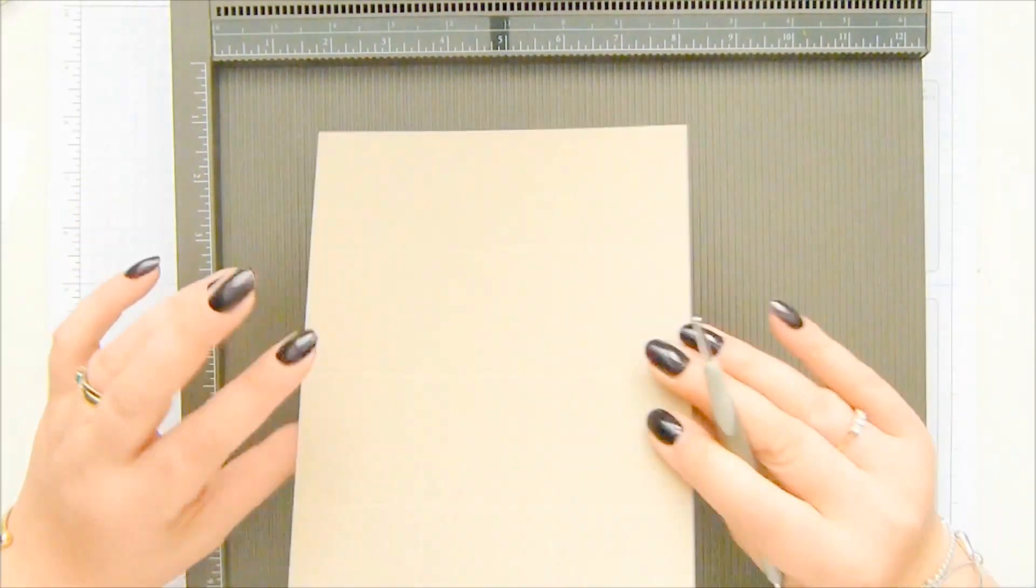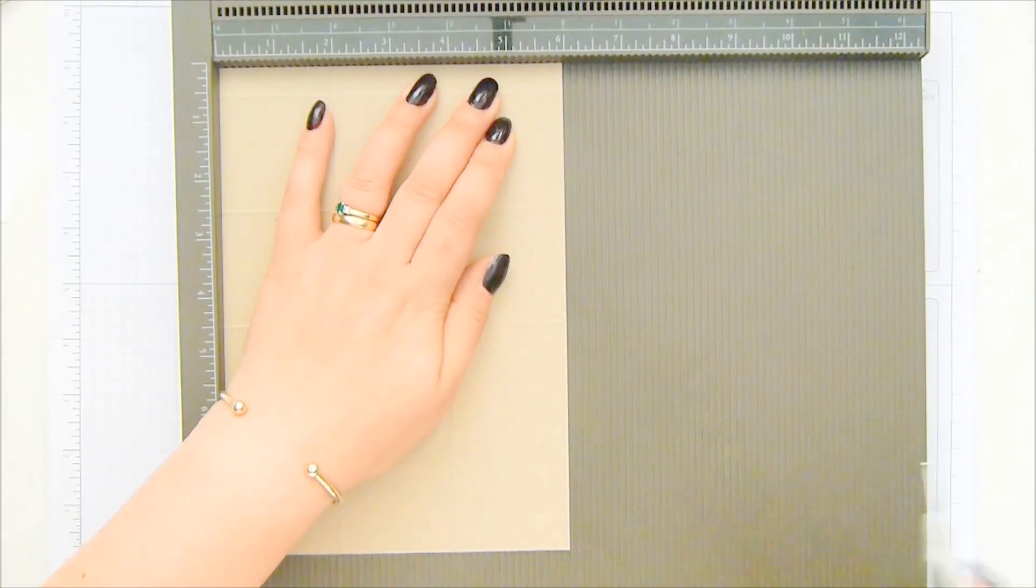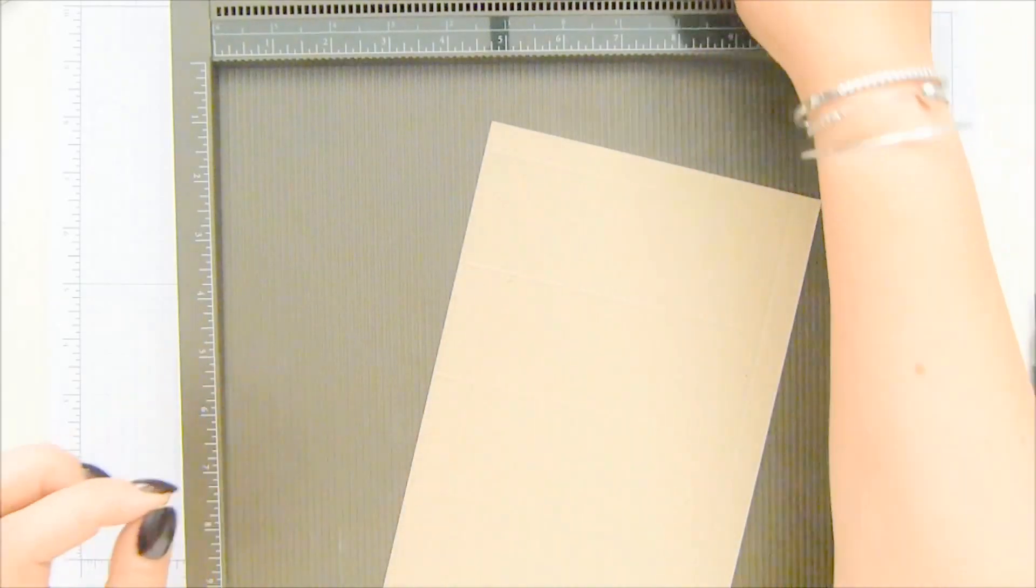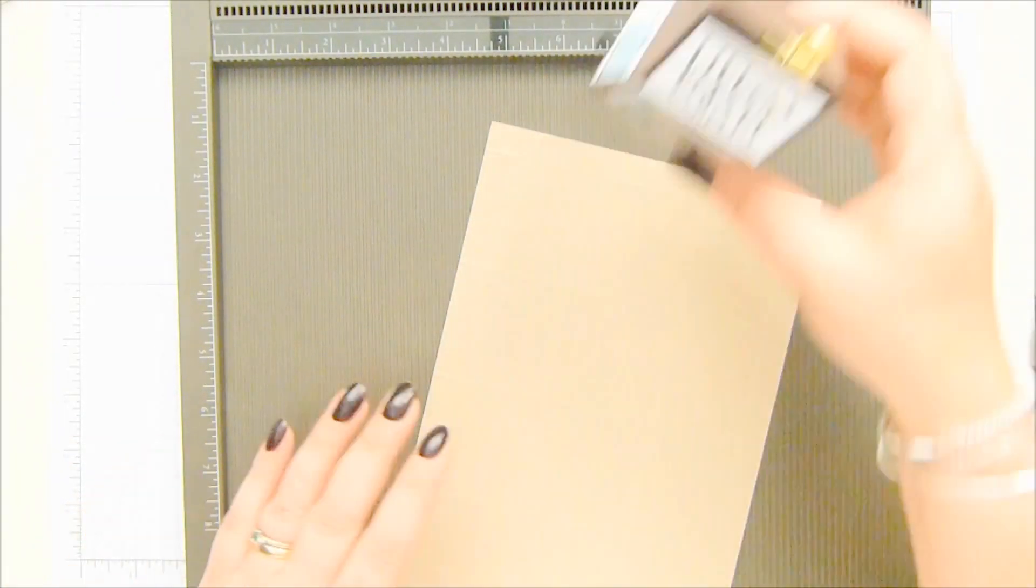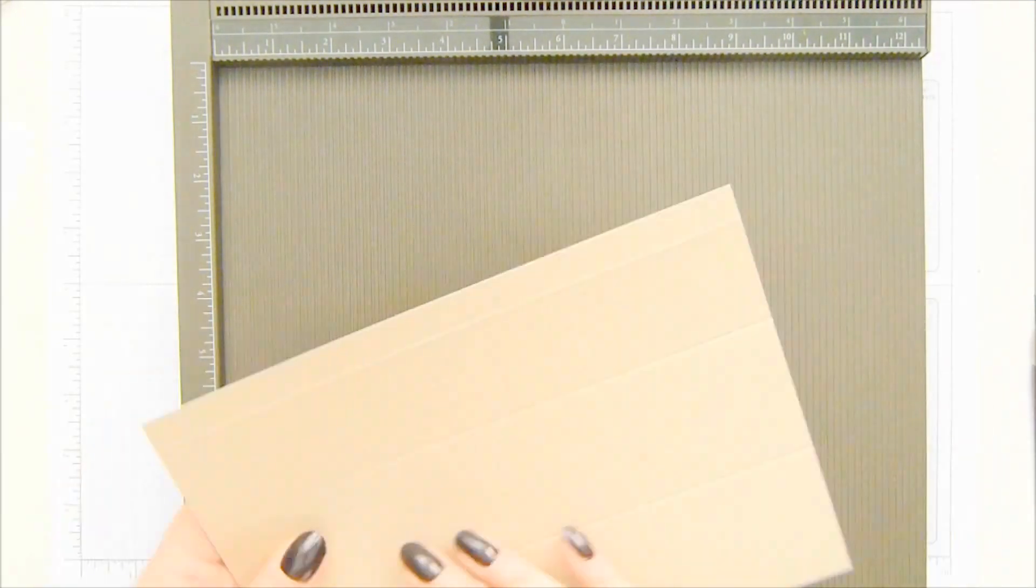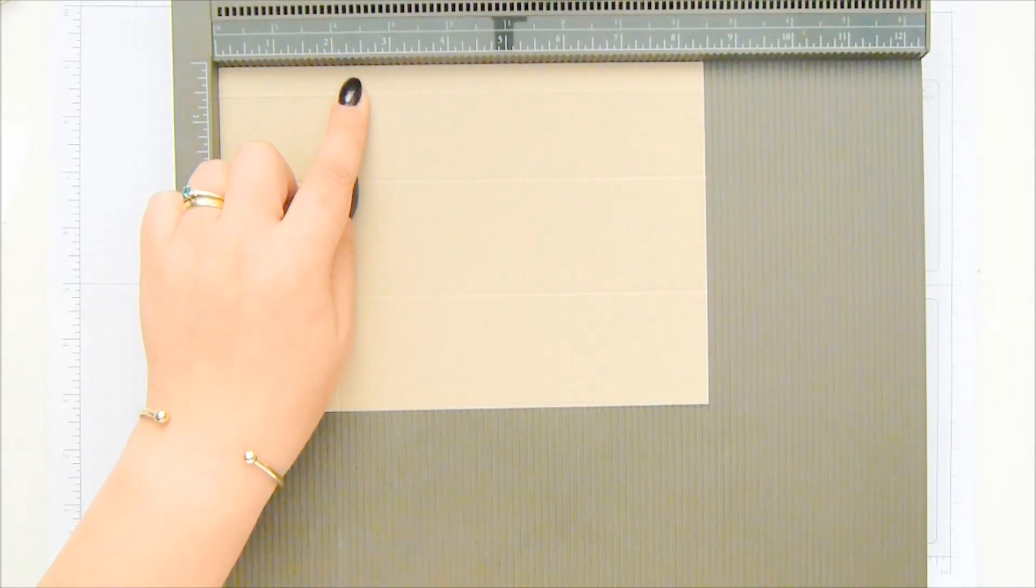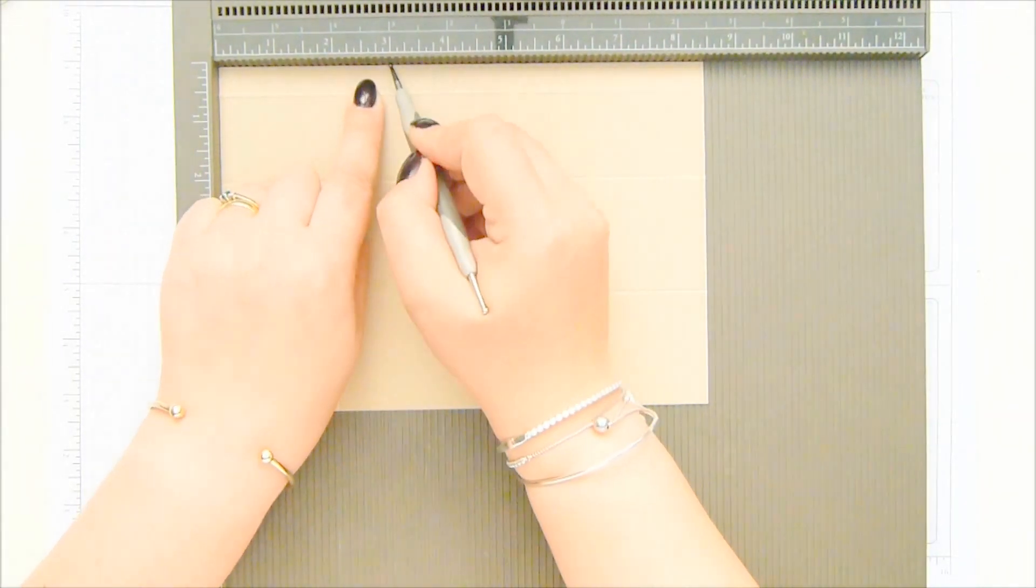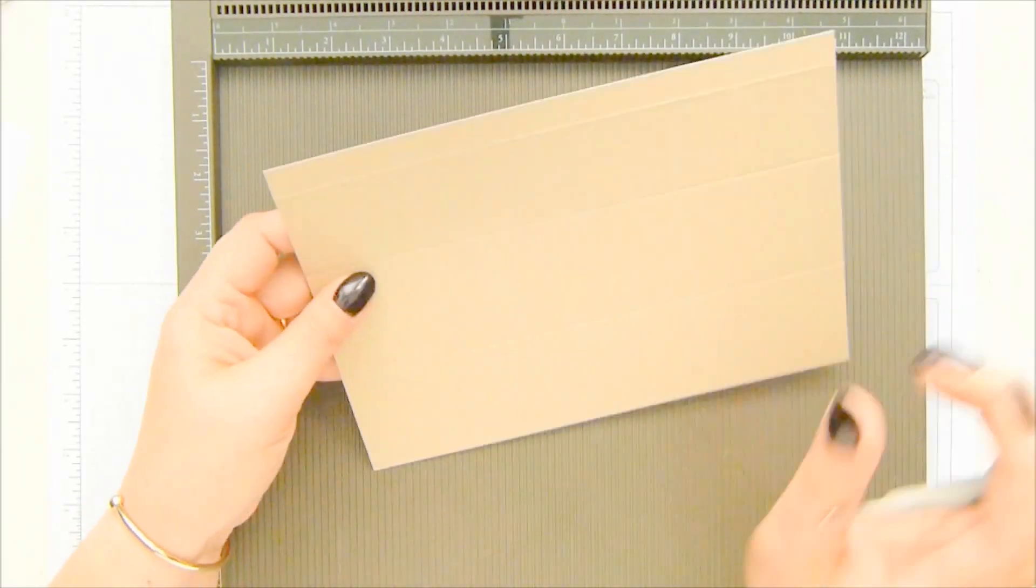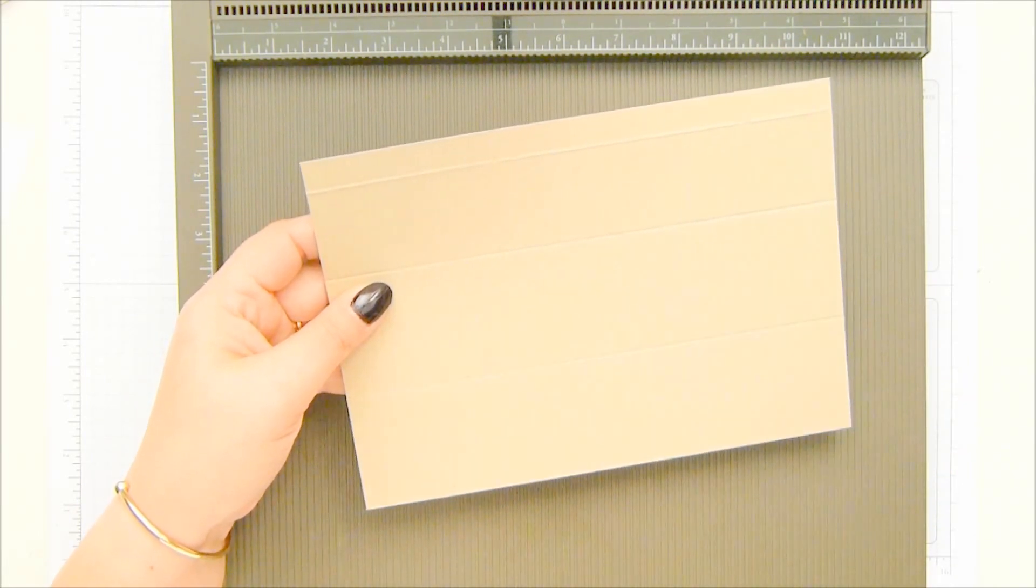Then turn the paper over that way. So you're scoring on the other side at five and a half inches, which is thirteen and a half centimeters. And that's how we're going to get this nice little mark here. Come back to the top where we put that score line in, and score straight down at three inches.